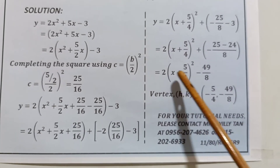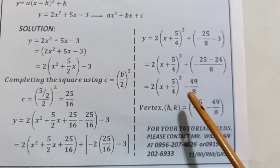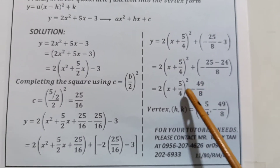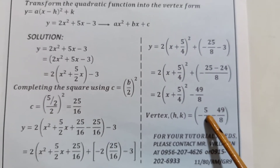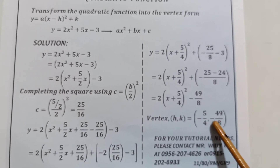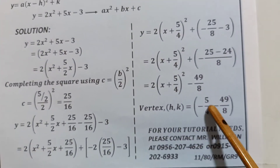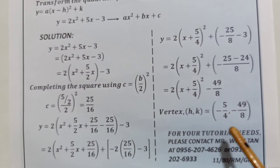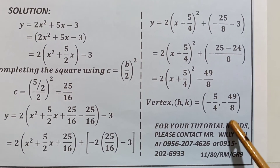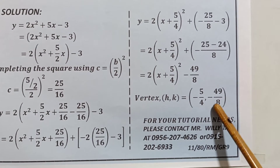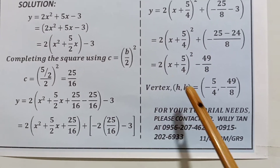So the vertex of this parabola is h equal to negative 5 over 4 and k equal to negative 49 over 8. That is our answer for the second problem. We already have the graphical solution of the first problem, so we leave it for you to study.